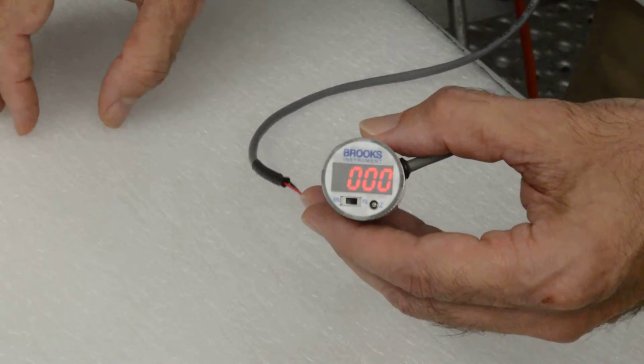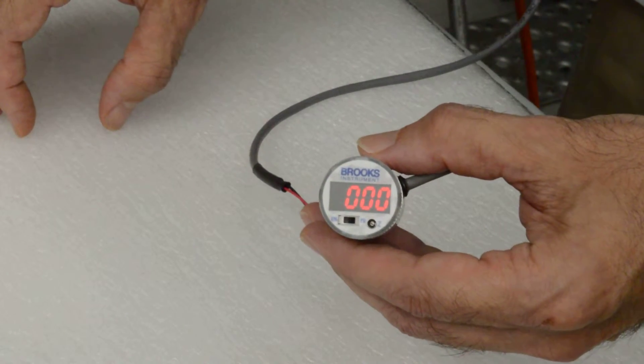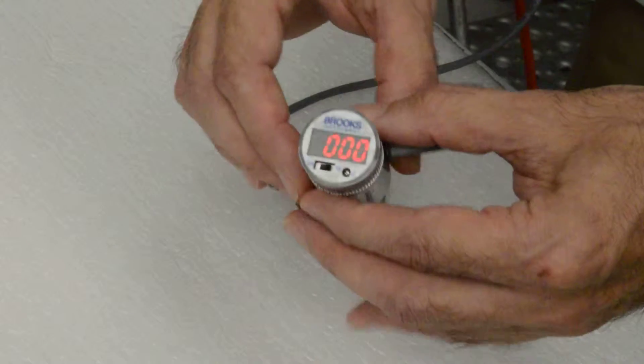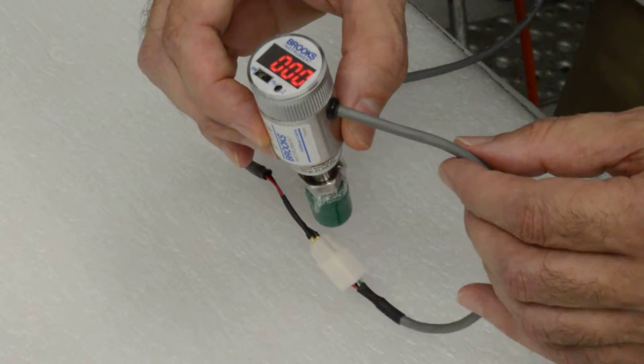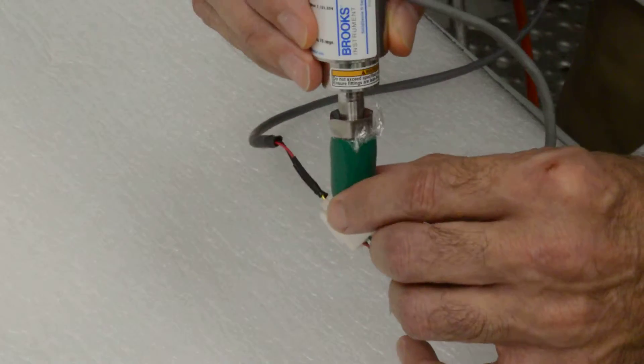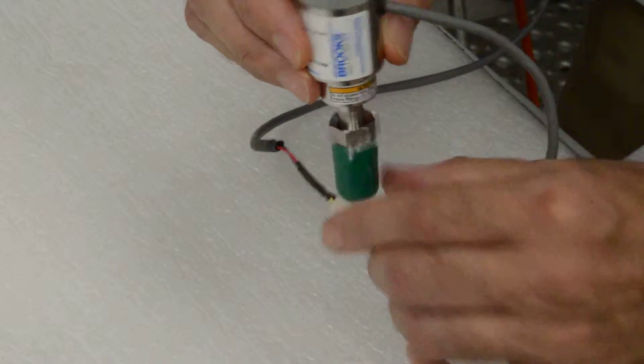This is the Brooks SolidSense 2 integrated display, pressure transducer, available with voltage and amperage output, as well as several different hardware pressure fittings.